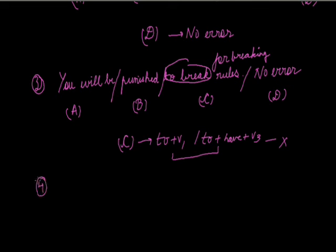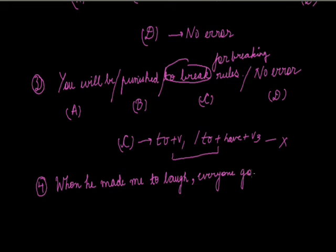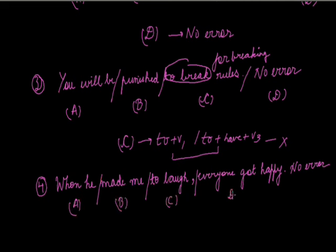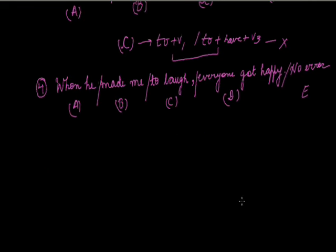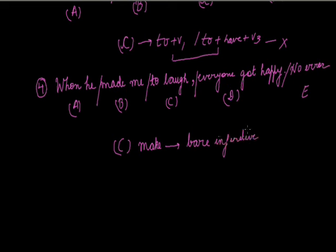Next question: 'When he made me to laugh, everyone got happy.' Parts A, B, C, D, and E. The error is in part C because the verb 'make' always takes a bare infinitive — that means the infinitive without 'to', i.e., only V1. So instead of 'to laugh', we use simply 'laugh'.